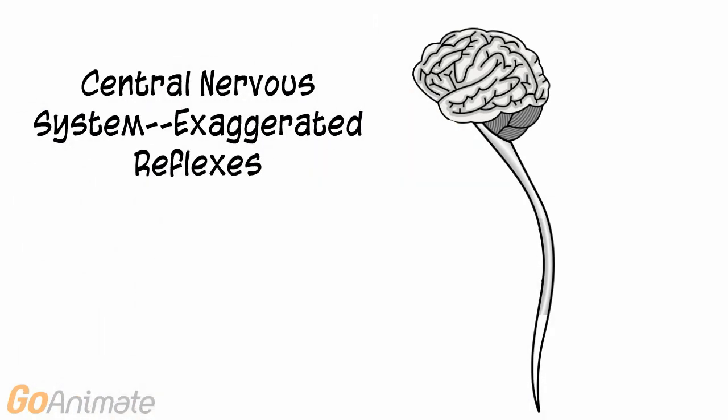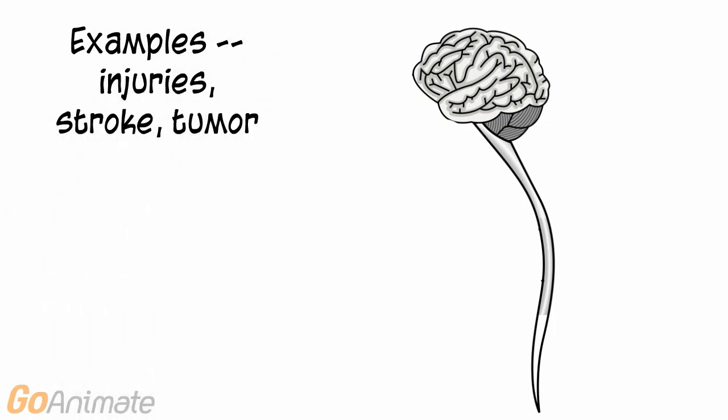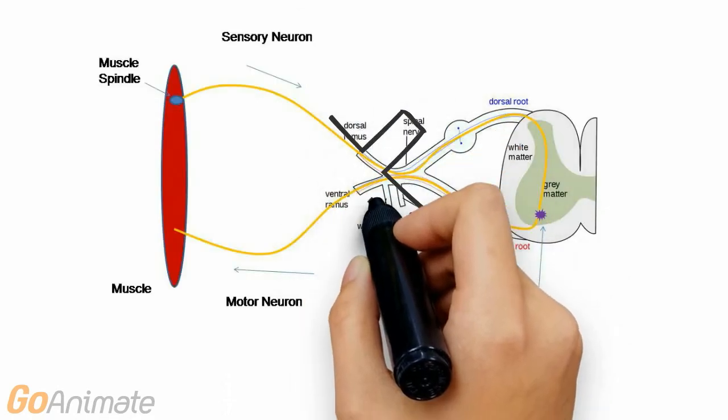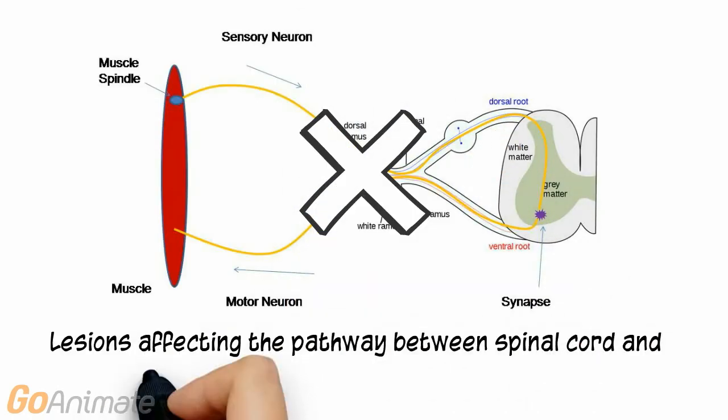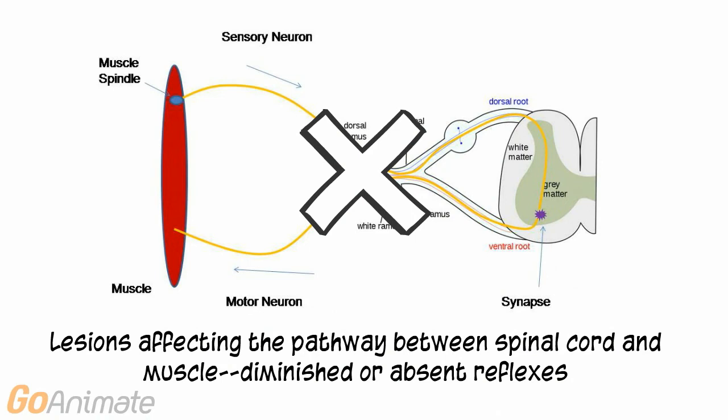Lesions of the central nervous system can decrease this inhibition and result in exaggerated reflexes. Lesions affecting the pathway between the spinal cord and muscle result in diminished or absent reflexes.